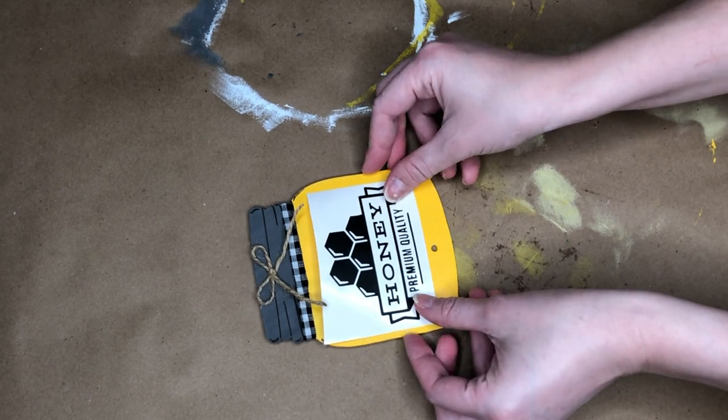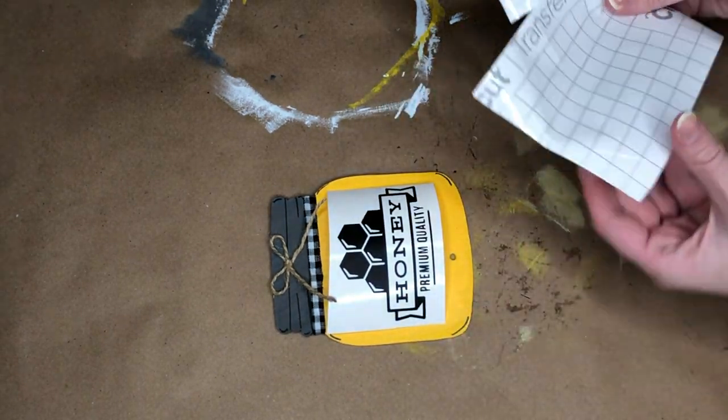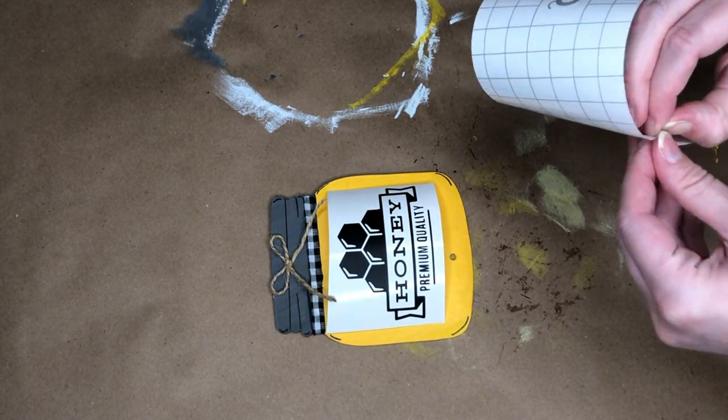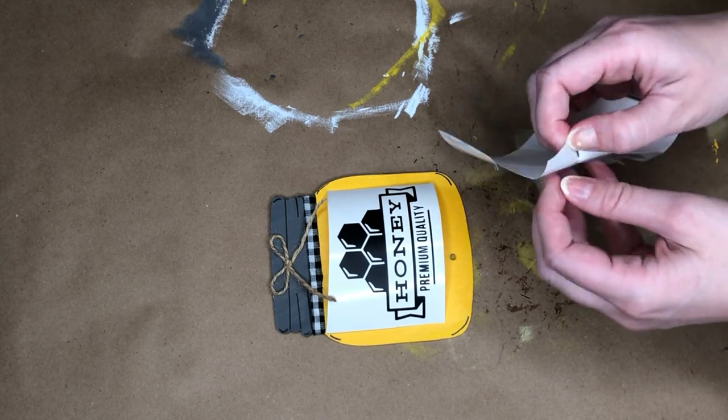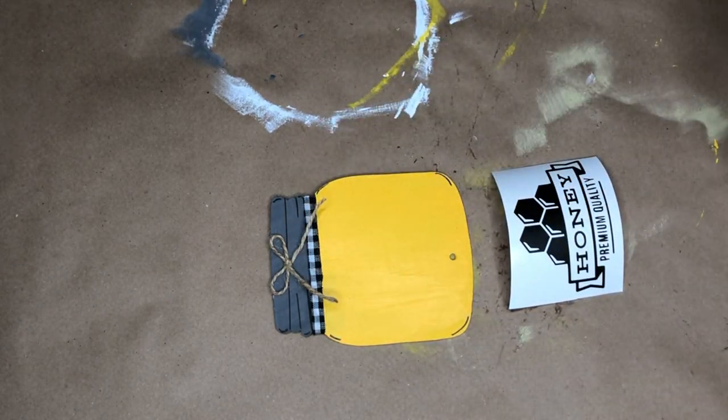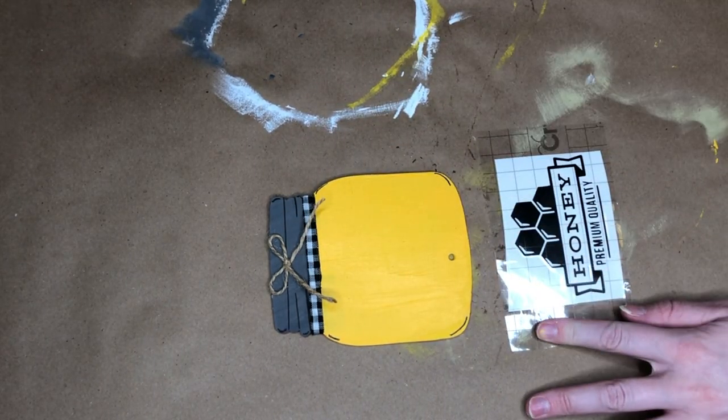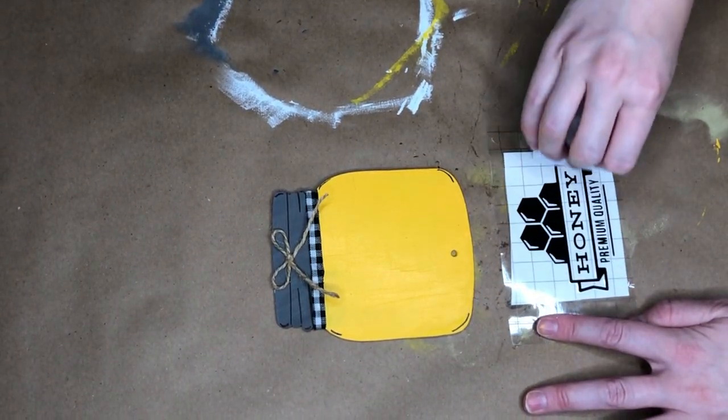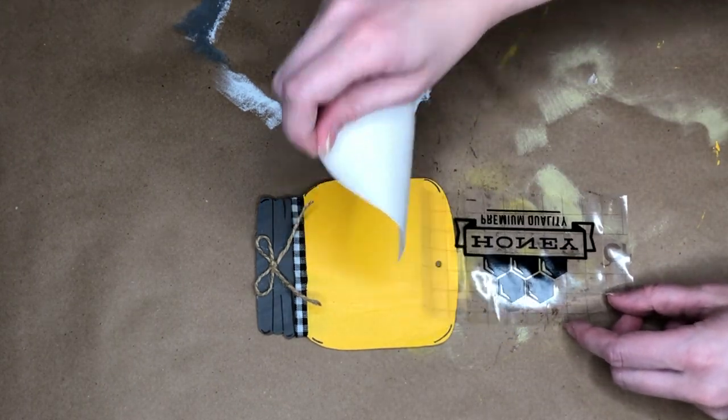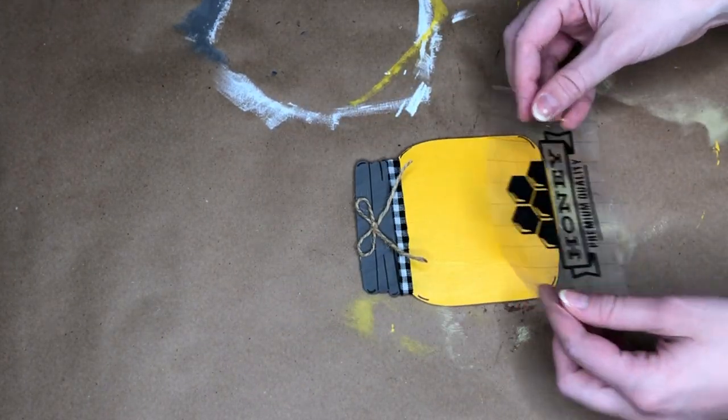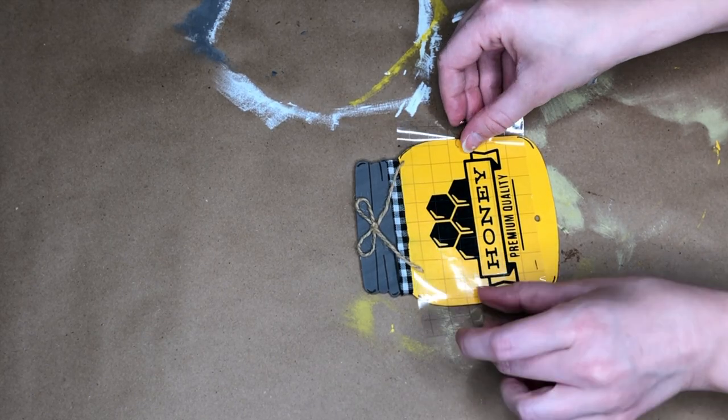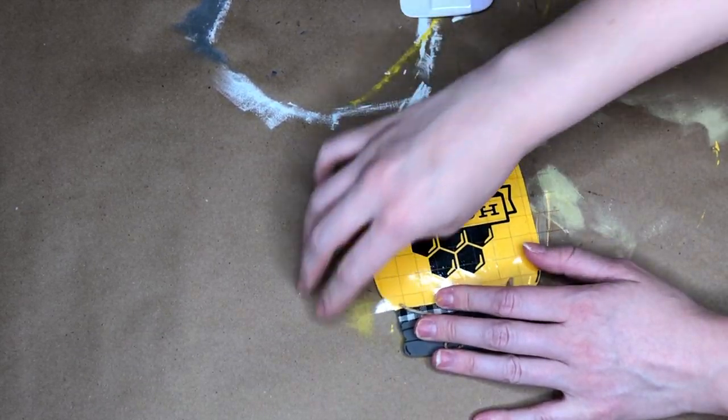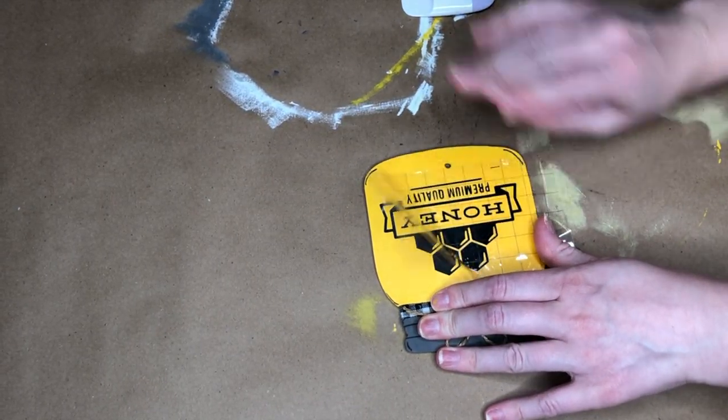Then I used my Cricut to cut out this really cute honey detail. I found this on Cricut Design Space. They have so many adorable honey and bee themed ones and I'm going to show you quickly how to transfer. I did a previous video on Cricut where I went a lot more in depth. Basically you'll just put the transfer tape on top of your vinyl, burnish it with a tool, and peel away the backing and then you can go ahead and place it down on your surface.